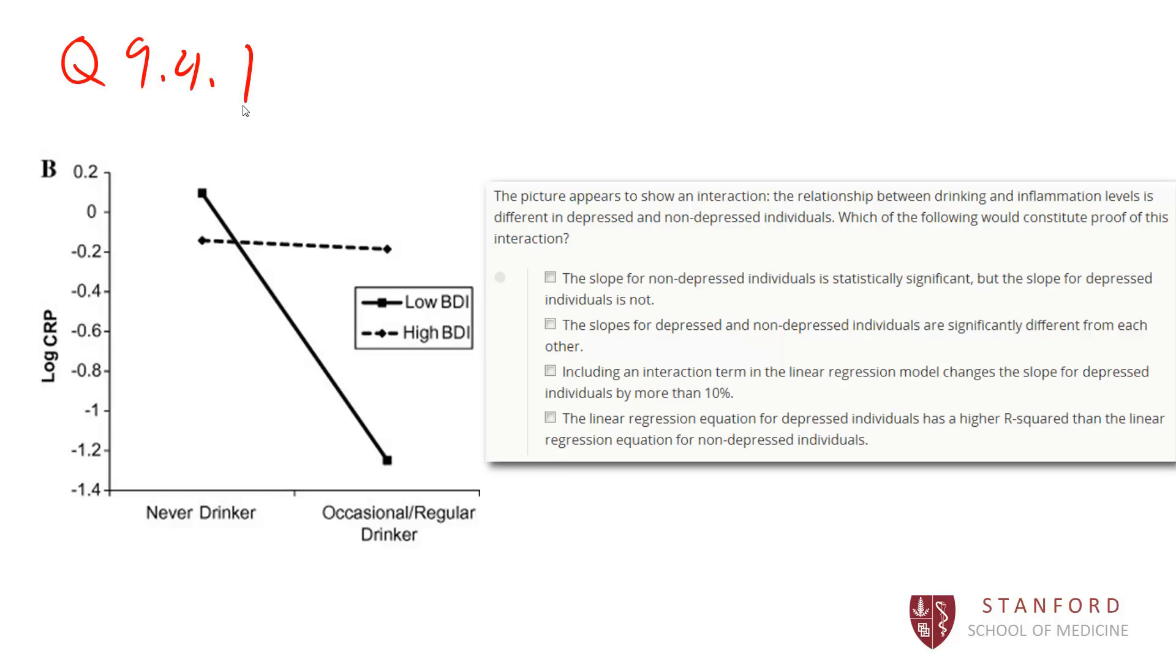So this picture is showing us potentially interaction because it's showing us that there's a bigger slope for the people who are not depressed than for the people who are depressed. The dotted line or the depressed people, they don't seem to get as much benefit in terms of a reduction in inflammation as the non-depressed people do. That's the darker line. The non-depressed people get a big drop in inflammation if they drink occasionally or regularly. So there seems to be a difference in the relationship between drinking and inflammation levels for depressed people versus non-depressed people. That would indicate an interaction.